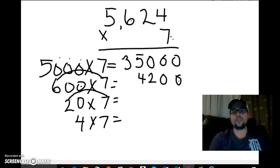So next I have 7 times 20. I'm going to think 7 times 2, that's 14. I'll bring my 0 over. And then I can put my 14 down, 14 tens or 140. Now I have 4 times 7.